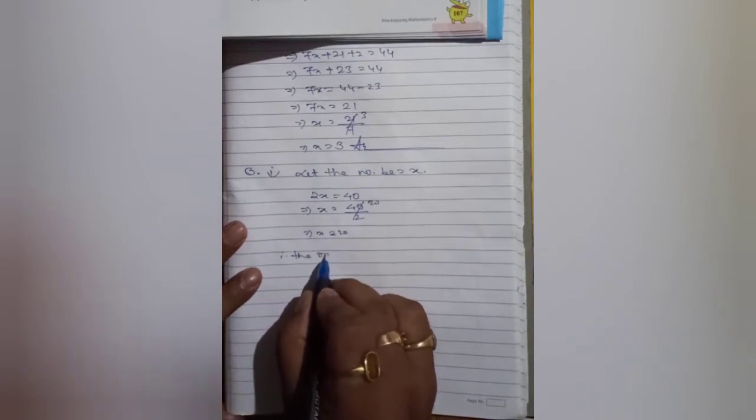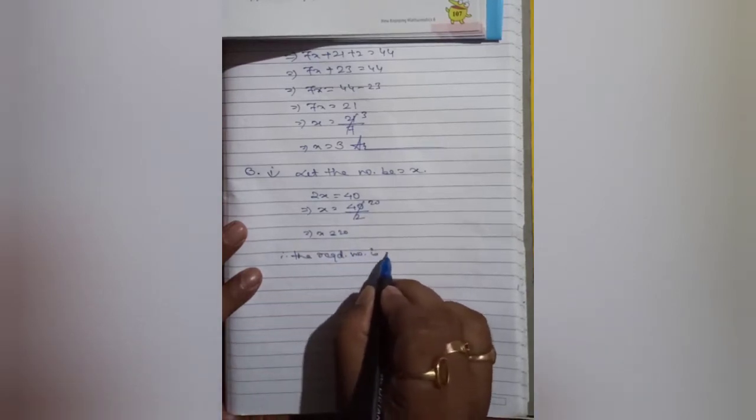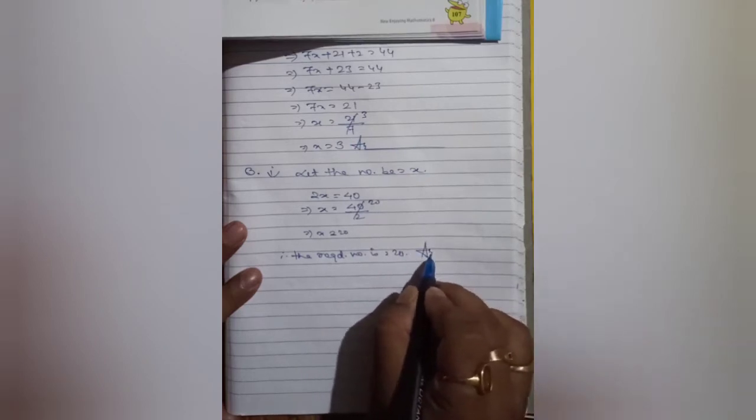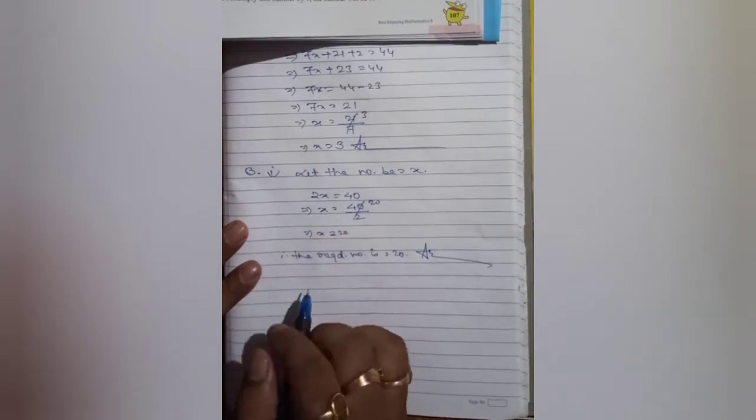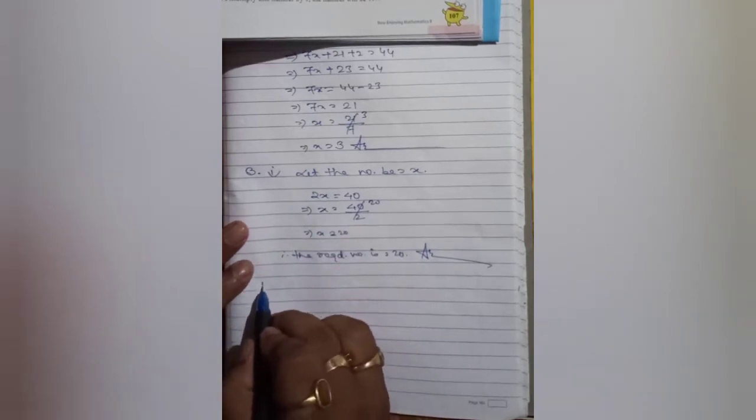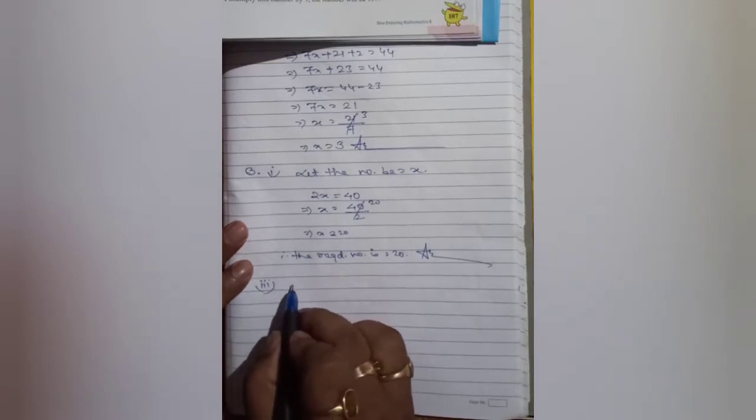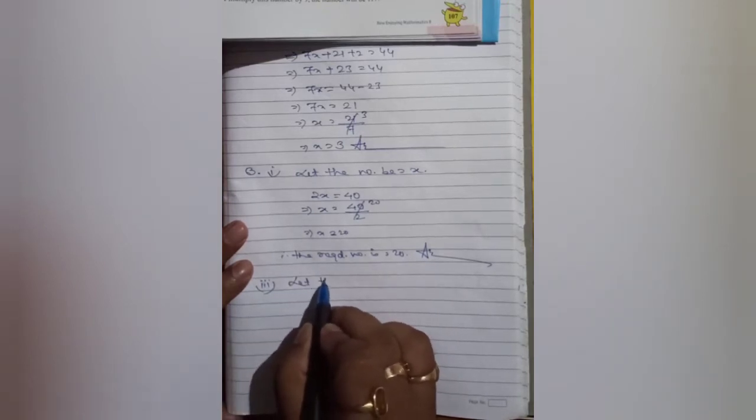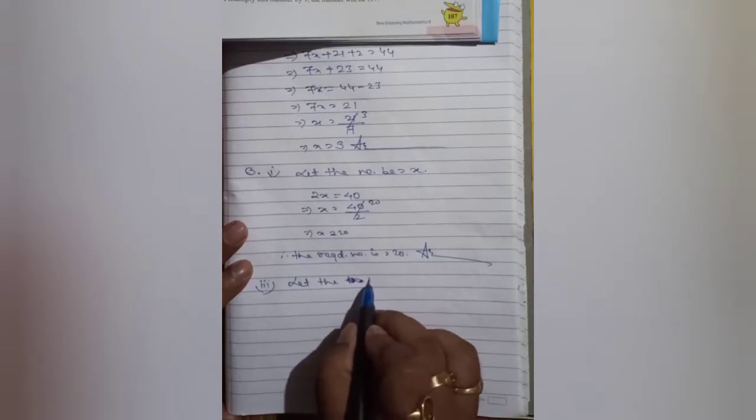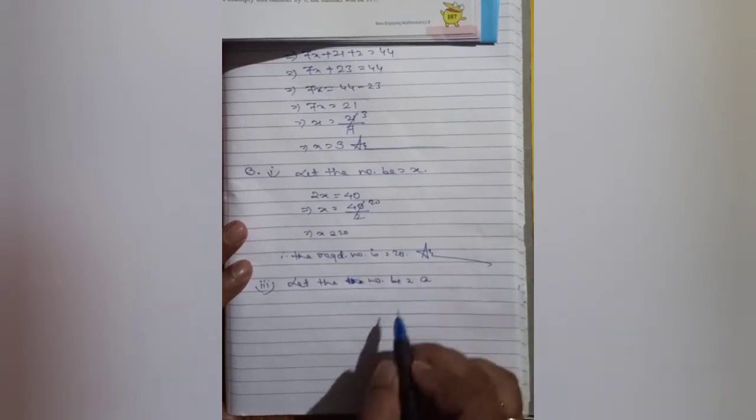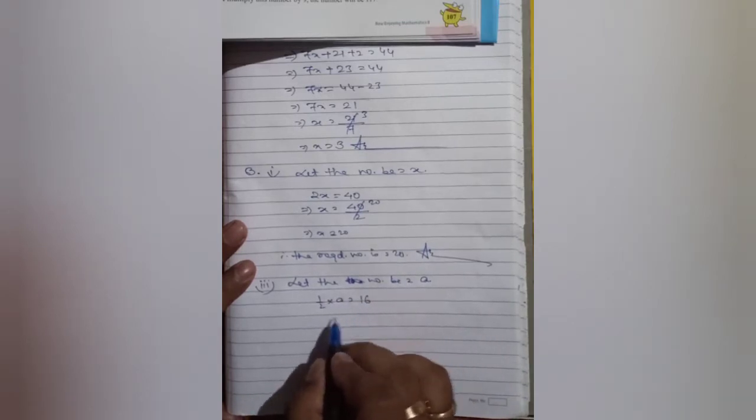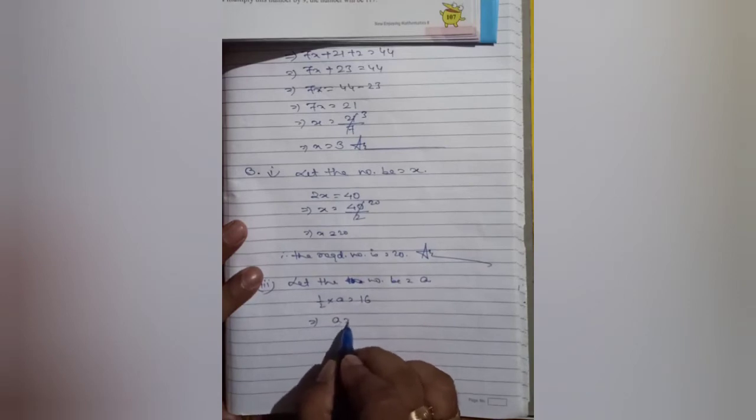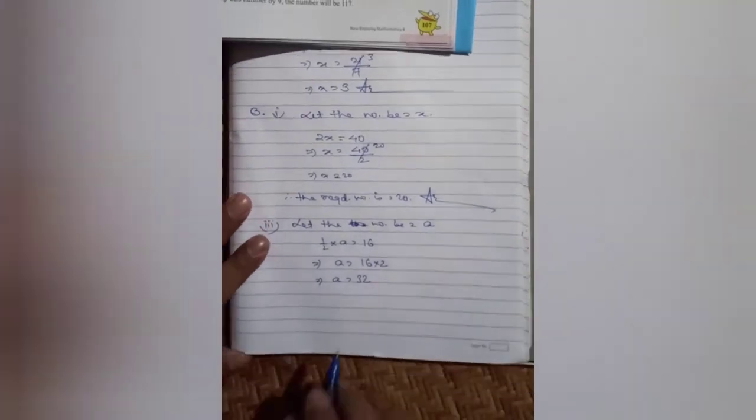Therefore the required number is 20. Five times a number equals 30, just like question number one, so I'm not showing that. Question number three: half of a number is 16. Let the number be a. Half of a is equal to 16, so a equals 16 into 2, equals 32.